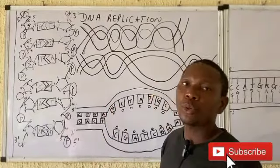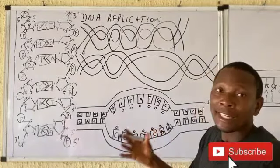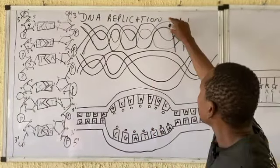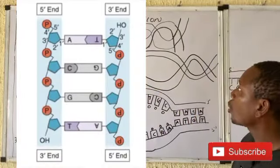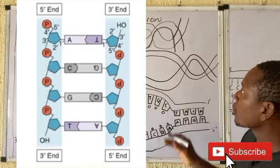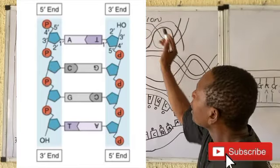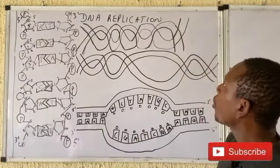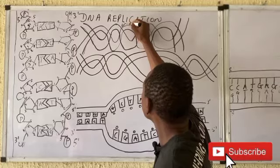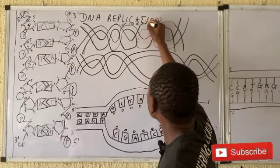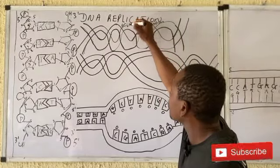With this understanding, let's look at how DNA replicates. DNA is a double helix — a twisted ladder-like structure. We can straighten it out as shown on the board. DNA replication starts at a site called the origin of replication.